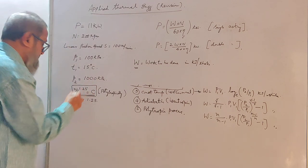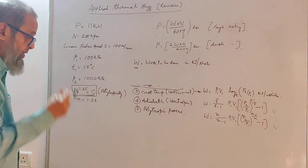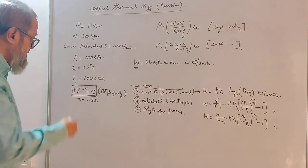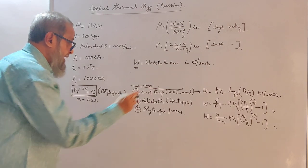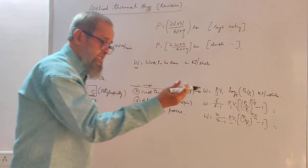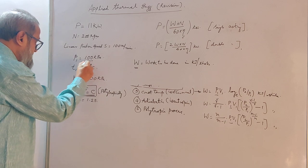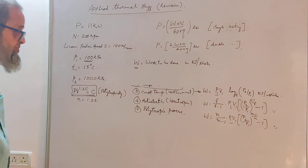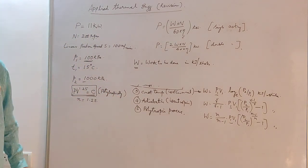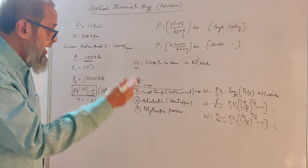In this problem it is polytropic. If it were adiabatic, γ would be 1.4. If it were isothermal, PV = constant, meaning P1·V1 = P2·V2. Now in all these formulae, P1 is the suction pressure — that is the pressure at which we take the air inside, which is the atmospheric pressure, around 1 bar (100 kilopascal). P2 is the delivery pressure — the pressure at which the air is delivered by the compressor.